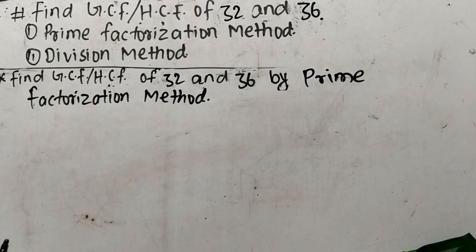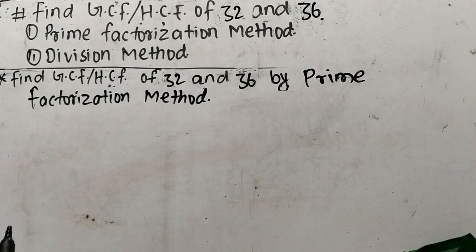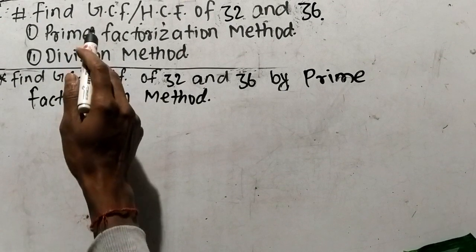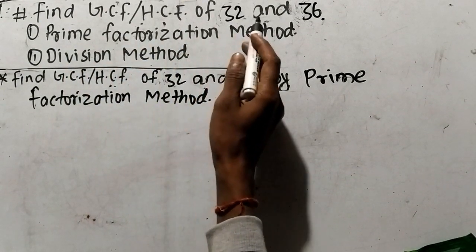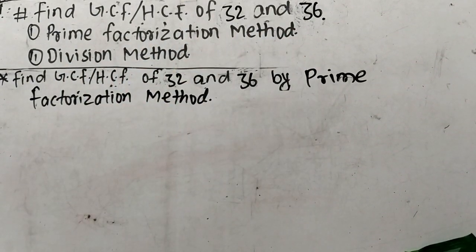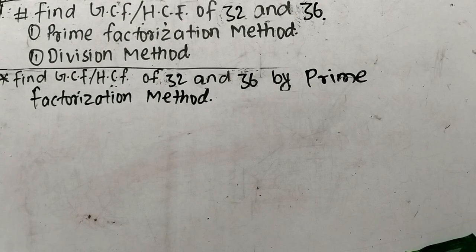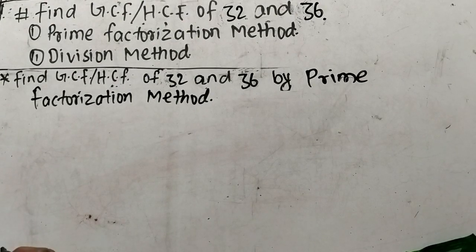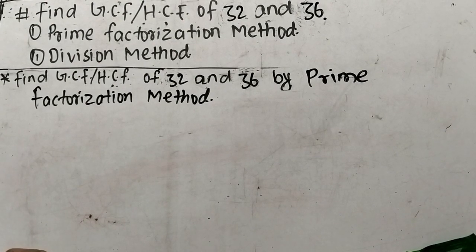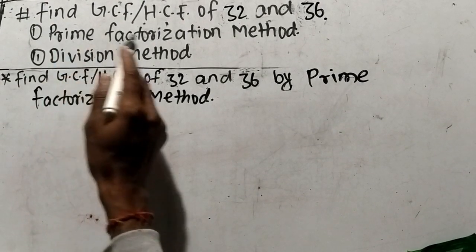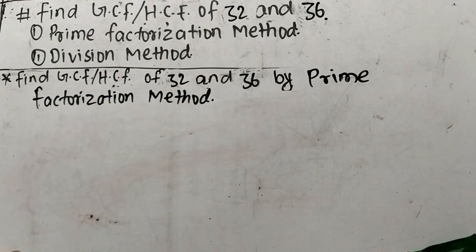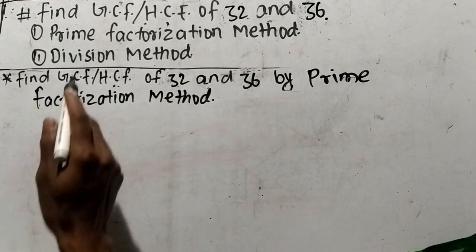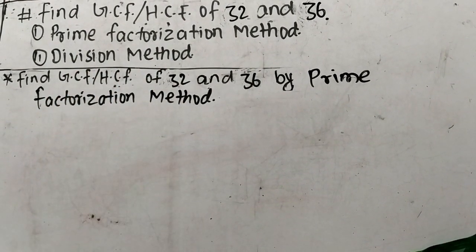Today in this video we shall learn to find GCF or HCF of 32 and 36. We shall find out GCF or HCF by two methods: first by prime factorization method and second by division method.